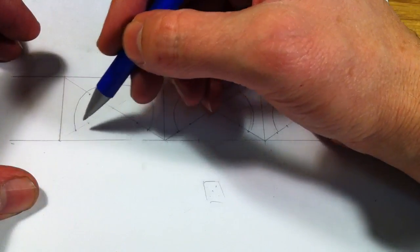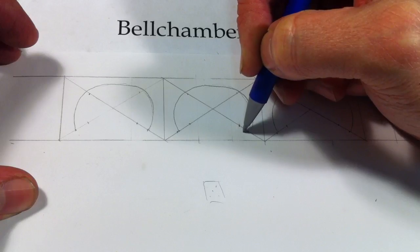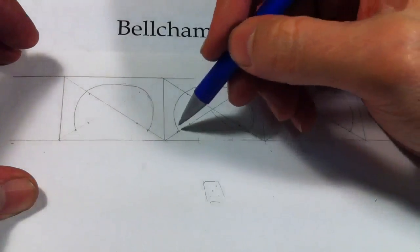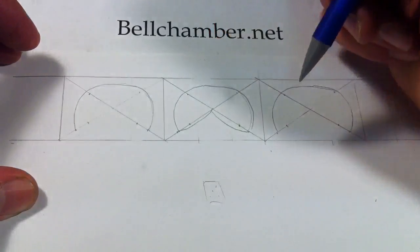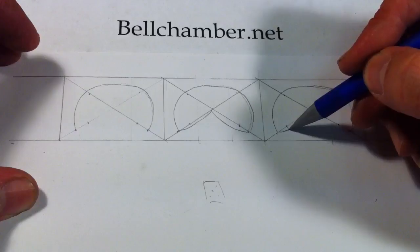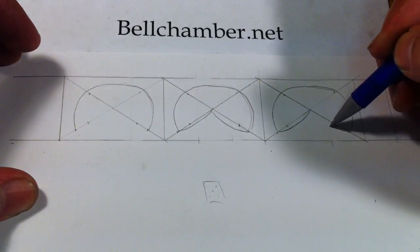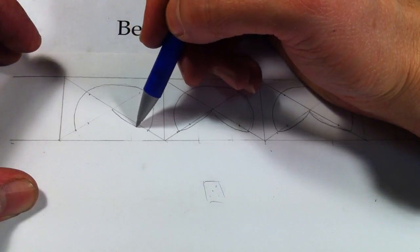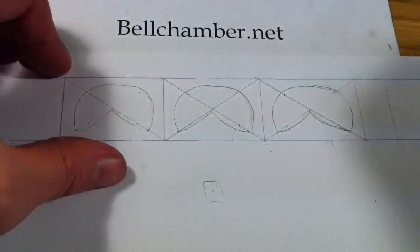Next, what we're going to do is draw a slightly curved line here and here, so repeat that in each of your rectangles, like that. Just try and make it a mirror image, like so.